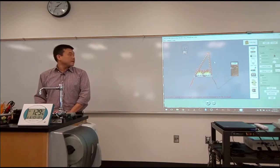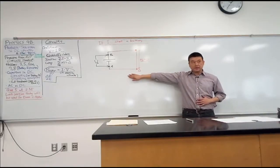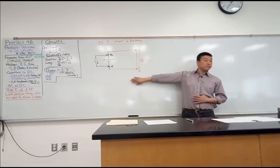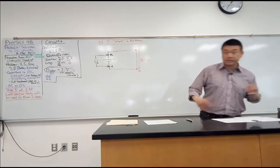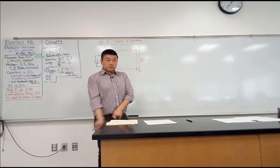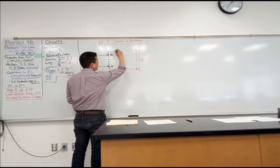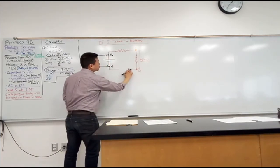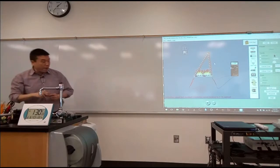As the current flows, the model is what's wrong — I have to modify something to make this model more correct. One thing I could do is modify my model so that wherever I'm drawing a wire, it's not actually a zero-resistance wire. It's actually a wire with some amount of resistance. That would be one way to correct this model.